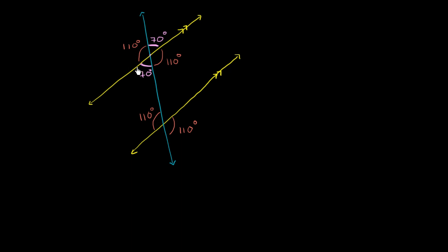This angle that's kind of right below this parallel line with the transversal — the bottom left, I guess you could say — corresponds to this bottom left angle right over here, so this is also 70 degrees.